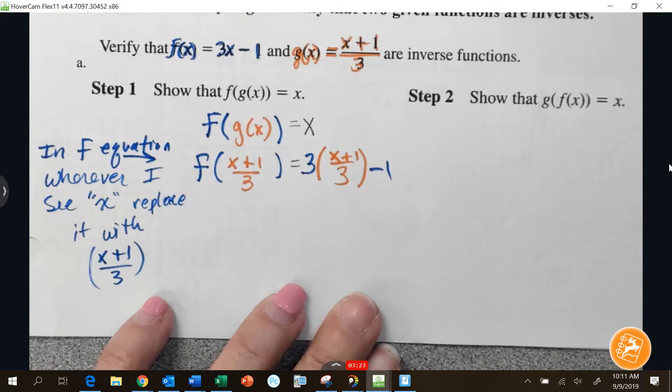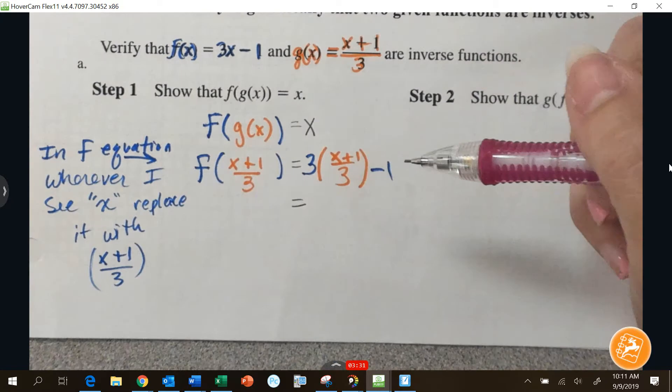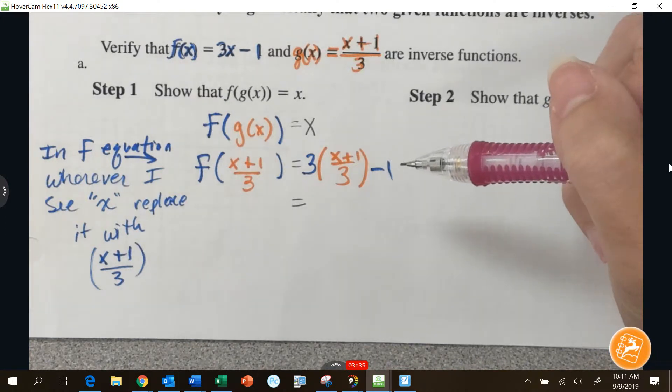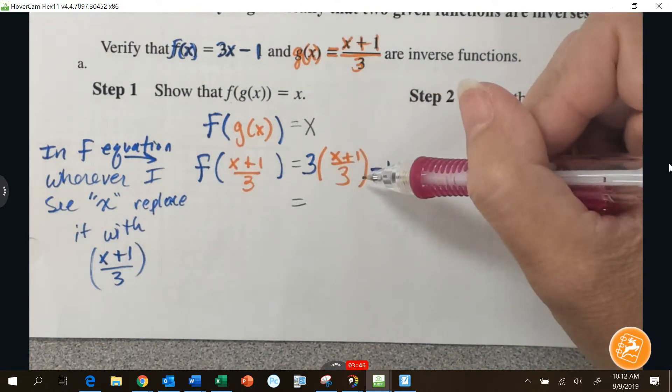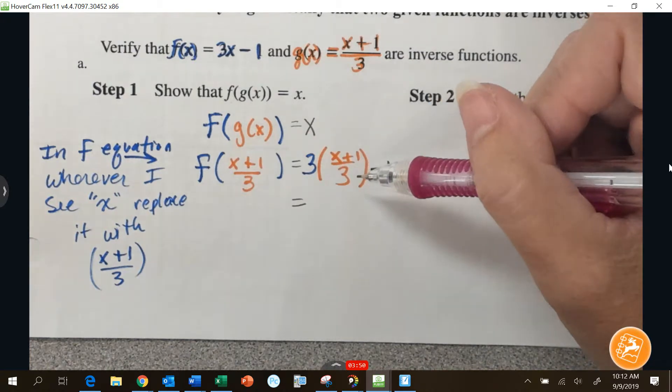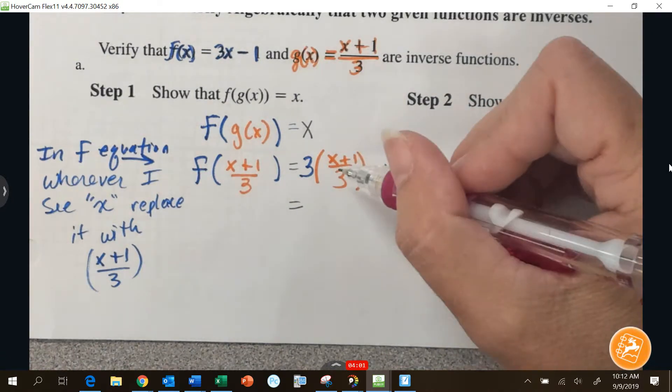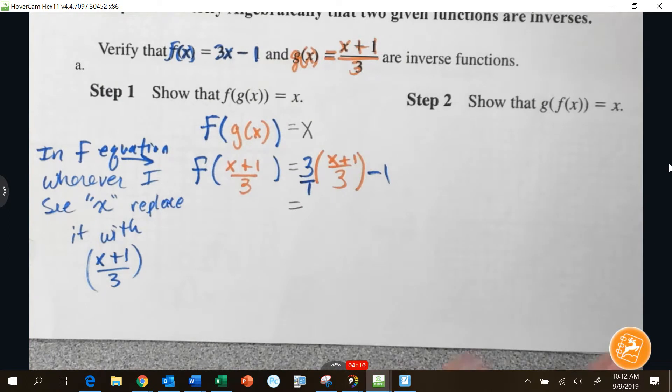Okay, so I replaced x with x plus 1 over 3. Now once I've done that step, I can just simplify. Where people make mistakes is they do not follow their order of operations correctly. So order of operations, what's first? Parentheses? Inside of the parentheses, can I divide x plus 1 by 3? Not really. After parentheses, exponents, don't have any of those. After exponents, is multiplication or division? What do I have next? Multiplication. I'm going to multiply 3 times x plus 1 over 3. So remember, 3 is over 1. And you multiply straight across.